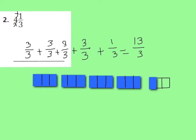This is what the model would actually look like. You would have 4 groups of wholes that are cut into thirds, because that's what my denominator is. So we have 3, 6, 9, 12, plus 1 more is 13 thirds.